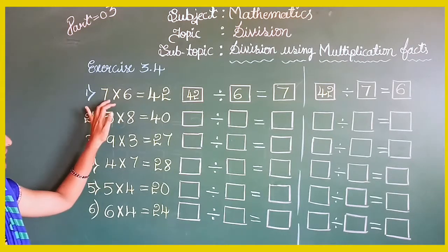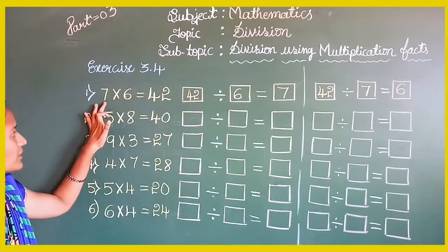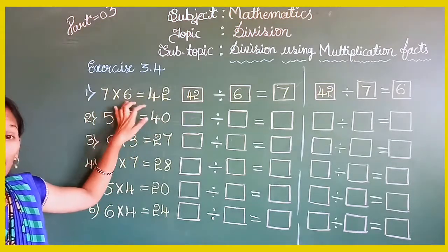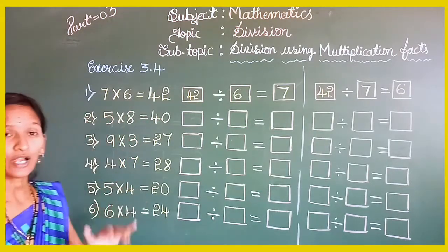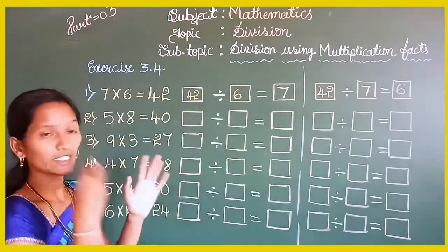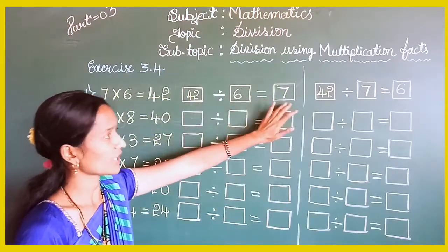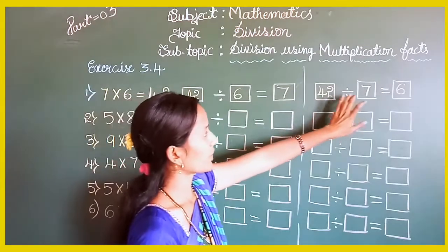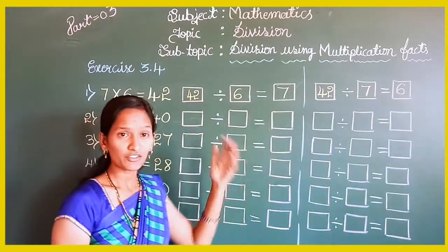The first problem is 7 into 6 equals 42 — that means 7 sixes are 42. This is the given multiplication fact. For this multiplication fact write down the two division facts: the first is 42 divided by 6 equals 7, and the second is 42 divided by 7 equals 6.